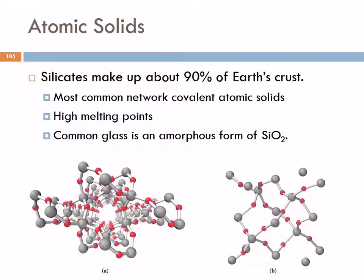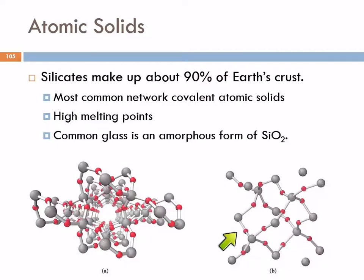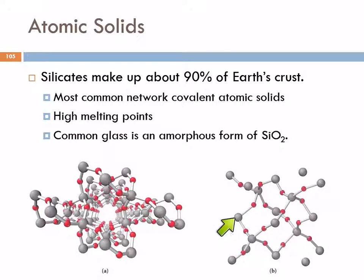Silicates are actually the most common network covalent atomic solids. They have high melting points. Common glass is an amorphous form, not a crystalline form. We have silicon atoms and oxygen atoms that, rather than being discrete molecules held together by dispersion or dipole-dipole forces, are bonded covalently — silicon bonded to oxygen, bonded to another silicon, bonded to another oxygen, and so on throughout the structure. It is held together by covalent bonds throughout, with just two different types of atoms in the structure.